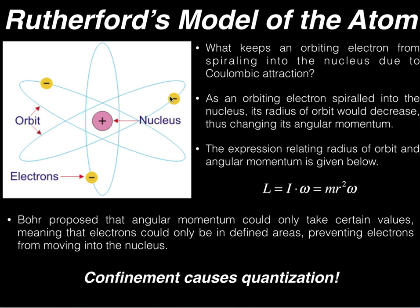If the radius can only take on discrete values, then there's no way for the electron to spiral into the nucleus and collapse, because if its angular momentum is quantized and can only take on discrete values, then the electron can only take on discrete radii from the nucleus and can only be in certain places.